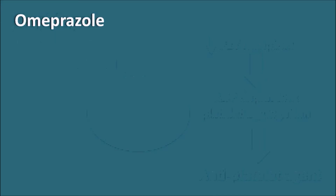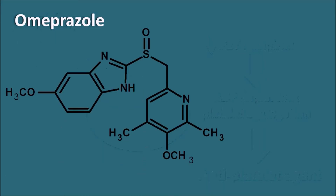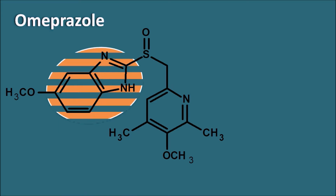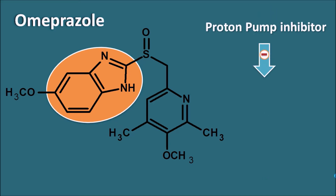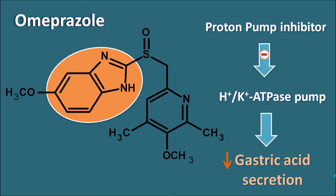Now let us see omeprazole. Omeprazole has a structure containing the heterocyclic ring system benzimidazole. Omeprazole belongs to the category of proton pump inhibitors, and it inhibits the H+/K+ ATPase pump, which is responsible for the secretion of gastric acid in the form of HCl. This pump is inhibited by omeprazole, thereby inhibiting gastric acid secretion.